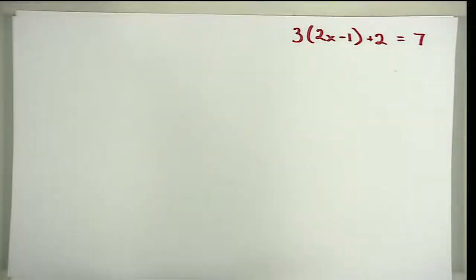We're going to take a look at this example: we have 3 times the quantity 2x minus 1 plus 2, and that is equal to 7. We're going to solve this with a representation.